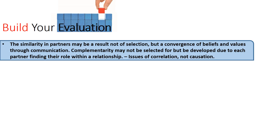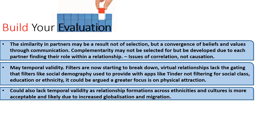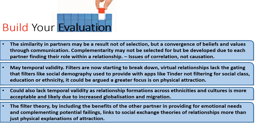This research might also lack temporal validity. We could argue that today these filters are starting to break down, as we're quite comfortable developing virtual relationships, which lack the gating factors that these filters provide. Social demography doesn't really work with apps like Tinder — you might be able to select for geography, but you can't filter for social class, education, or ethnicity, meaning there may be more focus on physical attraction instead. Furthermore, relationship formation across ethnicities was not as acceptable in the past as it is now, and with increased globalisation and integration, traditional filters may not really apply. One advantage of filter theory is that by including complementarity — the other partner providing emotional needs and complementing personal failings — it links to social exchange theories and goes beyond a basic physical explanation of attraction.